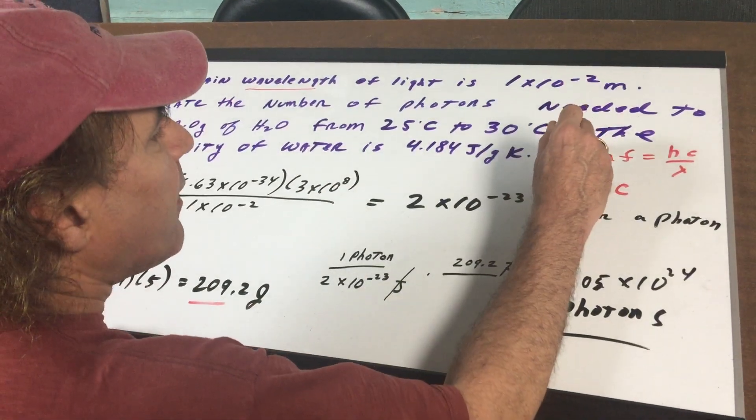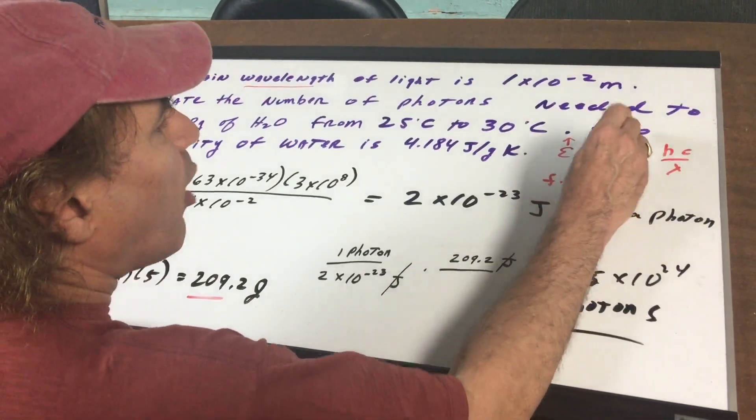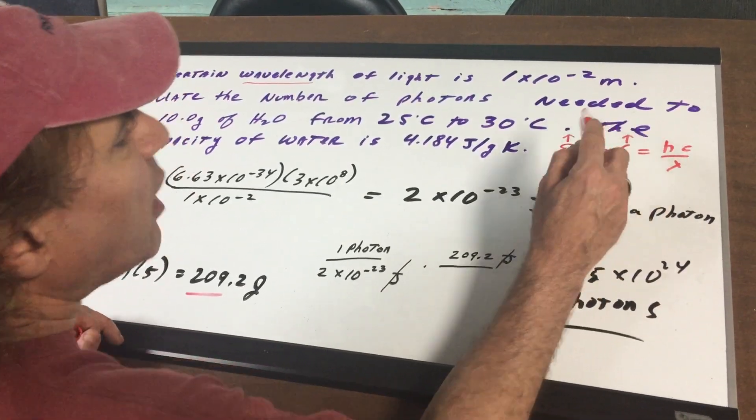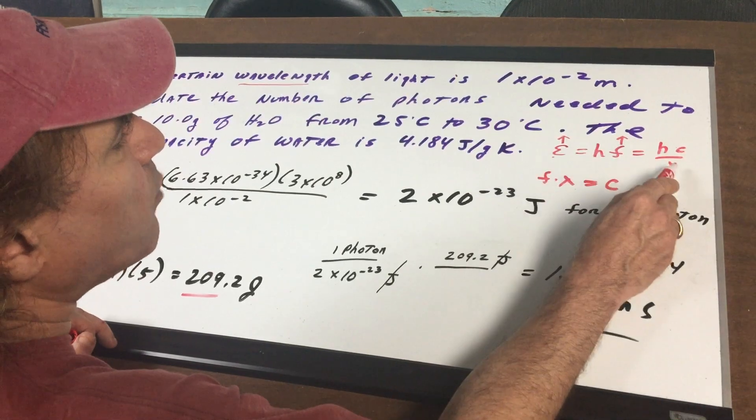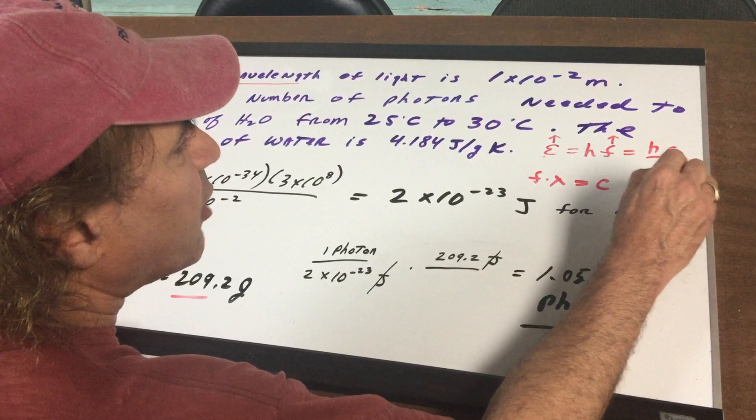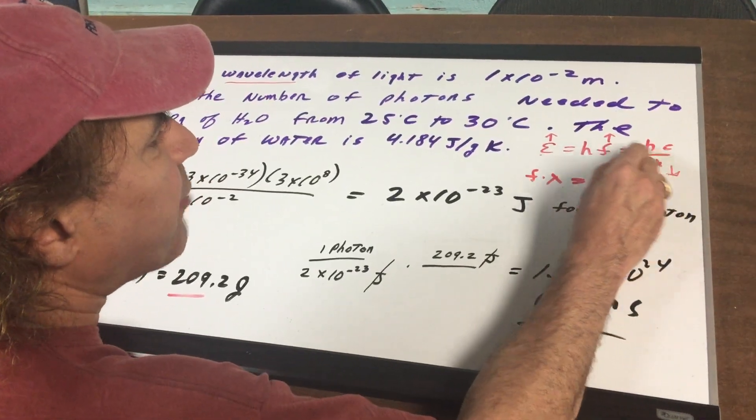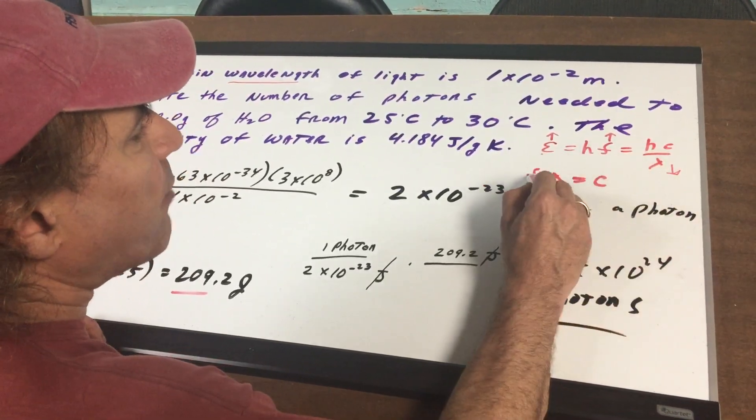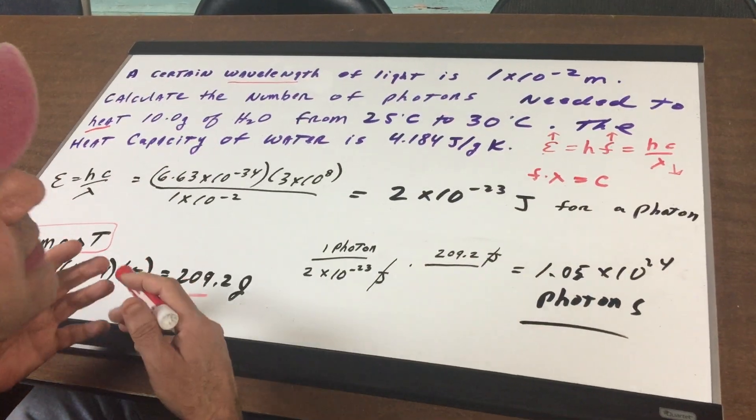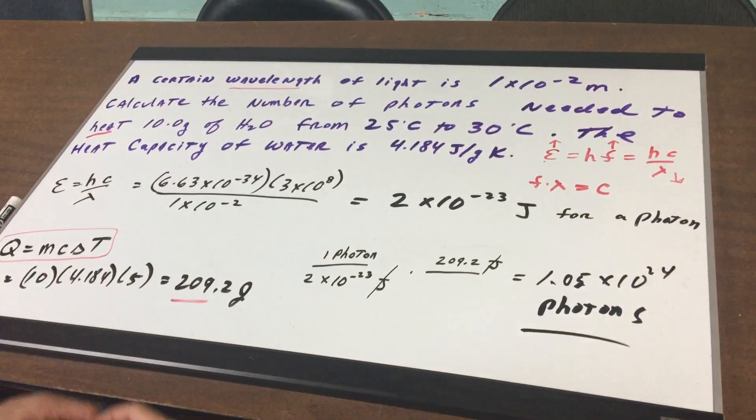As you can see here, energy and frequency are directly related. It's a guaranteed type of question. And also, if you were to compare energy and wavelength, they're indirectly related. Energy goes up, wavelength goes down. And the same thing for frequency and wavelength. You can see from either formula, these are indirectly related. Means if the frequency went up, wavelength would go down.